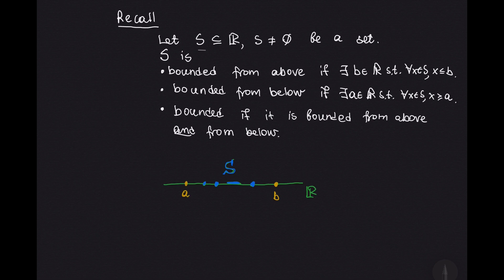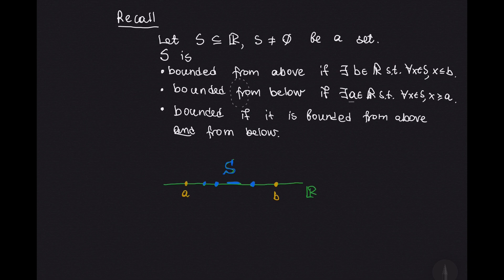So let S be a subset of real numbers that is not empty. Then we say that S is bounded from above if there is a real number B such that whenever we take an element X of the set S, that element X is less than or equal to B. We say that S is bounded from below if there is a real number A such that every element X of S is greater than or equal to A. And finally, S is bounded if it is bounded both from above and from below.